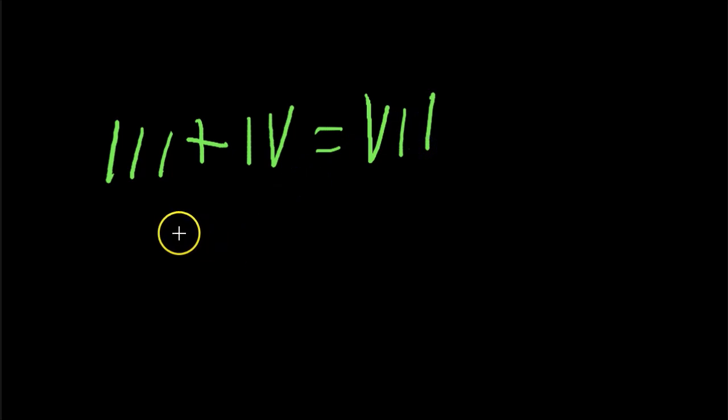So here we go, Roman numeral, let's just say we have III plus IV. Three plus four, well what is that? It is clearly going to be VII, seven.